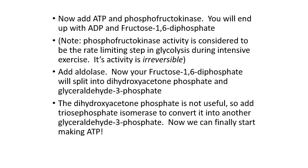We have fructose-6-phosphate and we're going to add another phosphate group to it, taking more ATP both for the energy and for that phosphate. We add the enzyme phosphofructokinase. Mixing fructose-6-phosphate, phosphofructokinase, and ATP together we end up with ADP and fructose-1,6-bisphosphate — meaning we have a phosphate at carbon 1 and a phosphate at carbon 6.